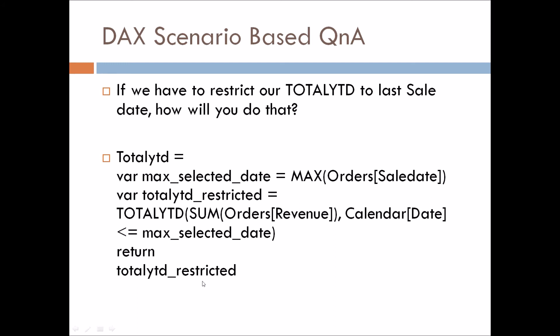At the end, we return 'Total YTD Restricted'. Now if you pull this measure on the Y-axis, it will be restricted to the latest day of September. I hope you understood the question and the solution.